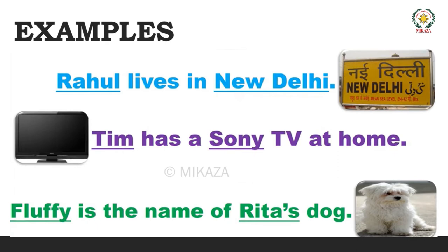Next example: 'Fluffy is the name of Rita's dog.' Look at the underlined words Fluffy and Rita's. Fluffy is the name of a special animal — his name is Fluffy. And who's the owner? Rita. So Fluffy is underlined because it's a special name of an animal, and Rita is a special name for a person. All the underlined words — Rahul, New Delhi, Tim, Sony, Fluffy, and Rita — are all proper nouns.